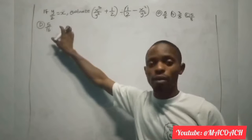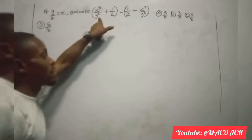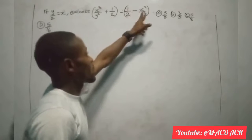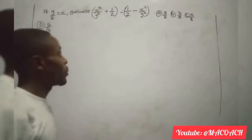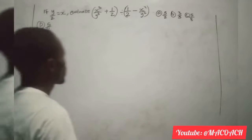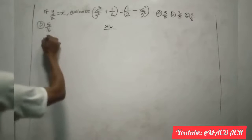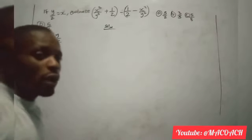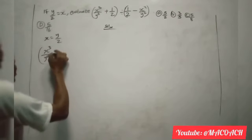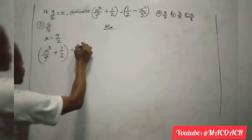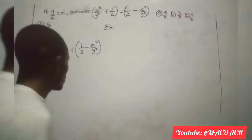This is the second question for today's mathematics class for the upcoming JAM examination. The question states: if y over 2 is equal to s, evaluate s cubed divided by y to the power 3 plus 1 over 2, divided by the bracket containing 1 over 2 minus s squared divided by y to the power one half, close bracket. We have our options. To solve this, the first step is: since s equals y over 2, we replace s with y over 2 throughout.